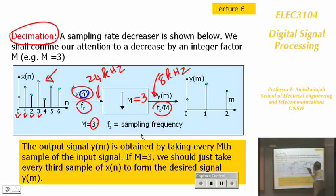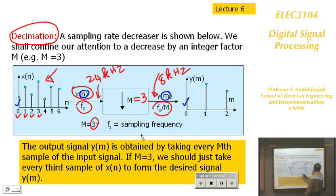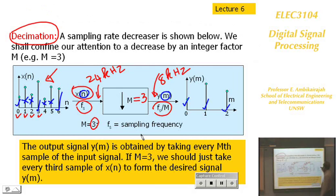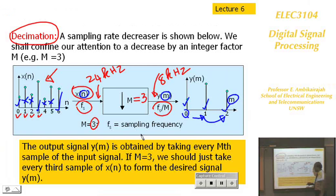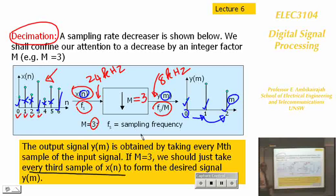Decreasing by 3 means you retain every third sample — one is retained, the next two are dropped, the following one is retained, and so on. This creates a new sequence at a lower sampling rate. Decimation by 3 means retaining every third sample of the signal.